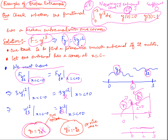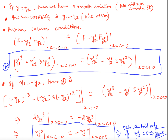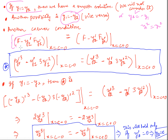We do not consider the smooth case y1' = y2', so we consider y1' = -y2'. The second Weierstrass condition is that f - y' f_{y'} from the left should equal f - y' f_{y'} from the right. Substituting f = y'^3, we get y1'^3 - y1' · 3y1'^2 at c from the left should equal the same expression from the right.